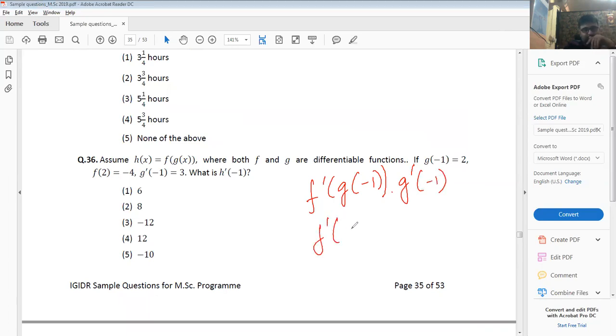f'(2) is -4 times... Again, chain rule, again same thing that we're doing.